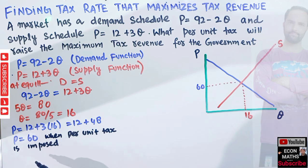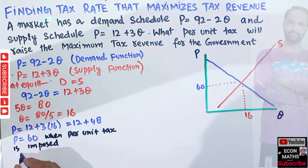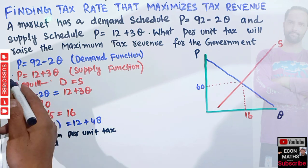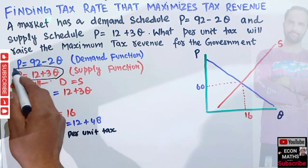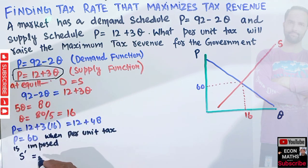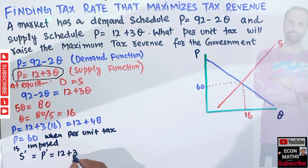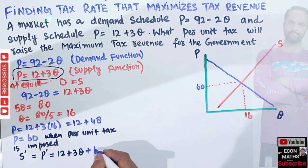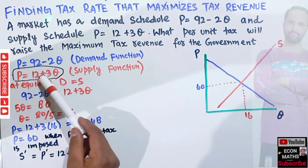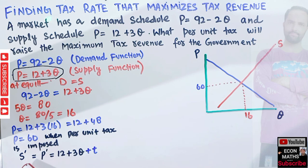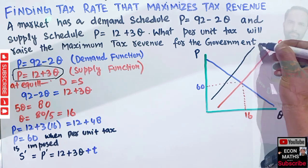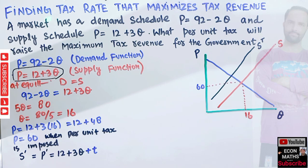Our new supply function S' will be: P = 12 + 3Q + t, where t is the tax rate. Originally the supply function was 12 + 3Q; when the per-unit tax is imposed, the supply function shifts left. Let's draw the new supply function with the imposition of the per-unit tax.